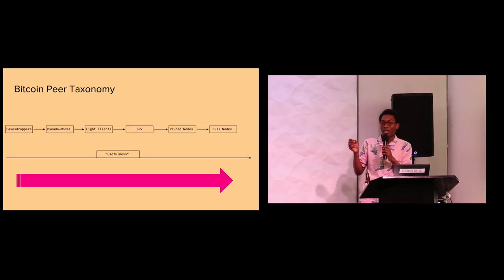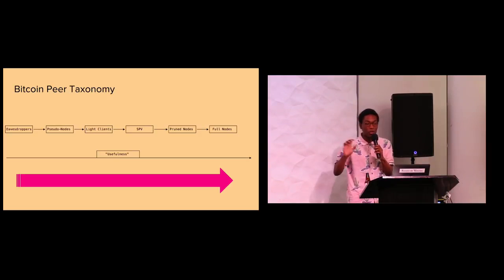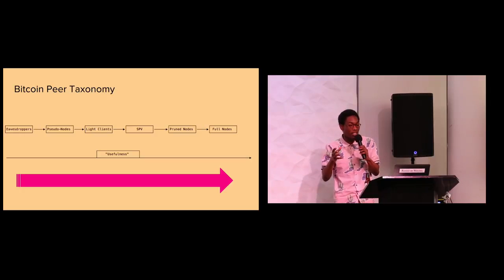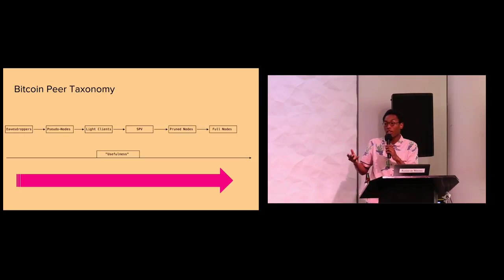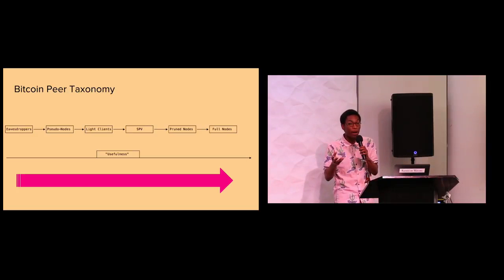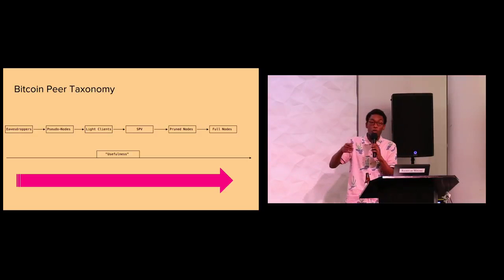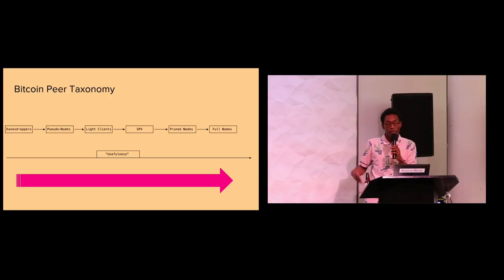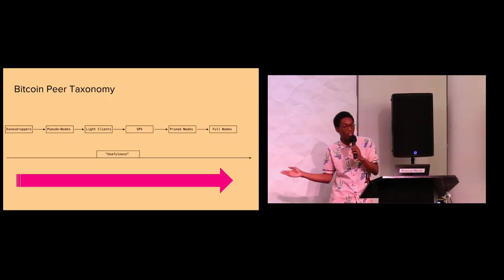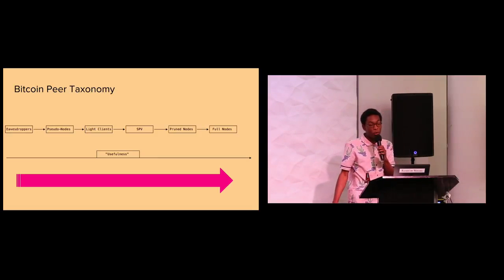Then we have sudo nodes — nodes that basically pretend to be nodes, advertise all the network bits, but actually just proxy all requests to other nodes they're connected to. So it looks like they're a node, but they're not really. Then there are light clients, which are more like nodes, actually do some verification, and provide useful services. Then there's SPV, which are light clients a little bit more resilient, able to verify incorrect behavior by miners and other nodes. Then we have pruned nodes — like full nodes, but they don't have the entire blockchain. And then we have full nodes, which are the most useful.